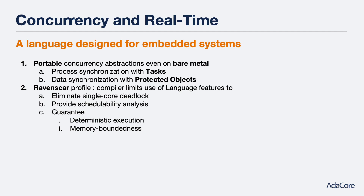A characteristic common to embedded systems is that they have real-time requirements. A whole chapter of the book is dedicated to presenting the concurrency abstractions of Ada. Ada's process and data synchronization primitives were designed to be portable from their inception, even on bare-metal systems, which unburdens a developer from implementing their own model or OS-specific code. The book also introduces the Ravenscar profile, a subset of language features that the compiler can help you use to ensure your code does not suffer from single-core deadlock, has deterministic execution, has a well-defined memory bound, and can have its schedulability analyzed.